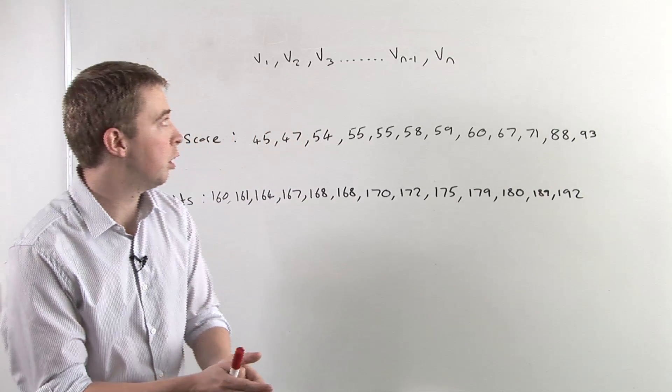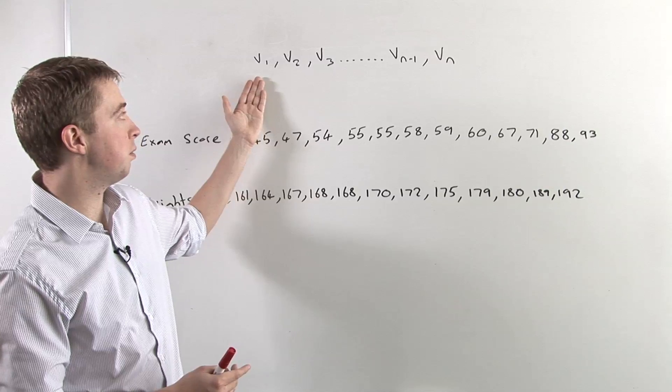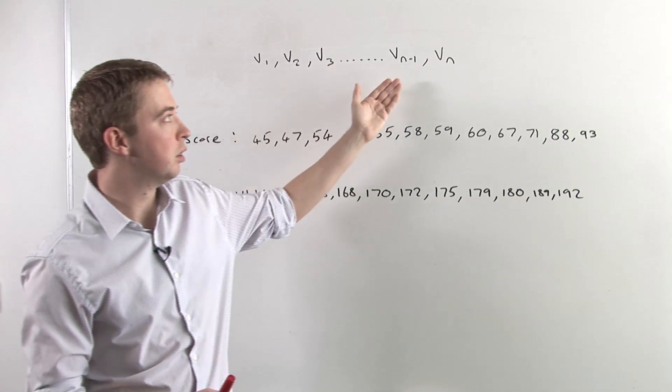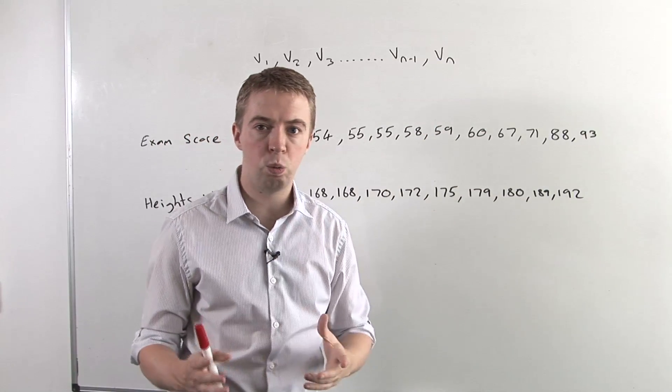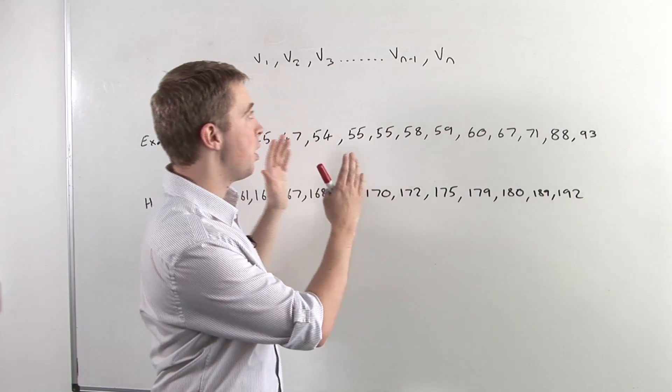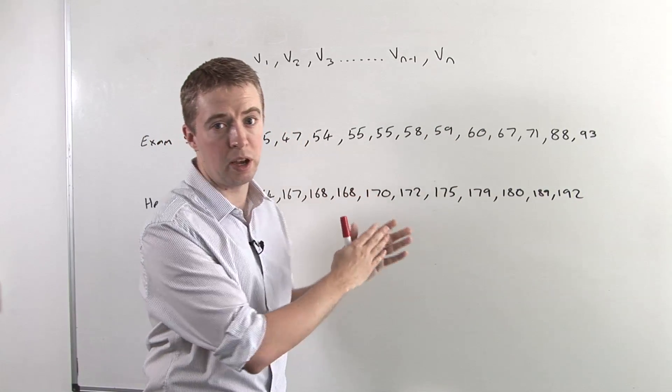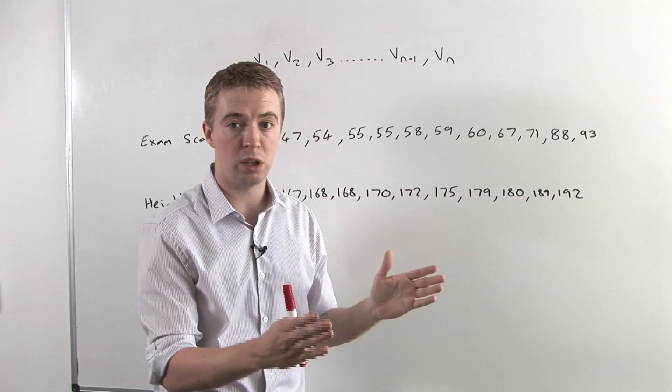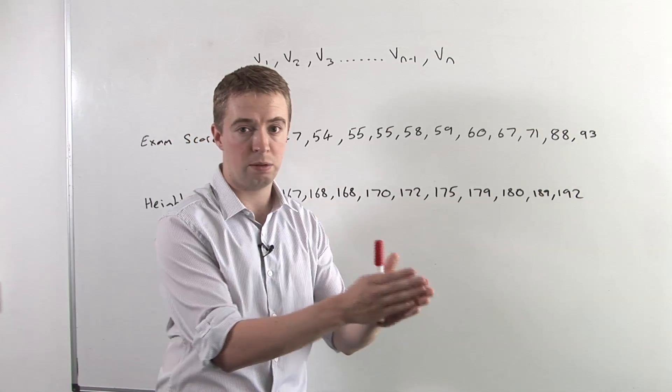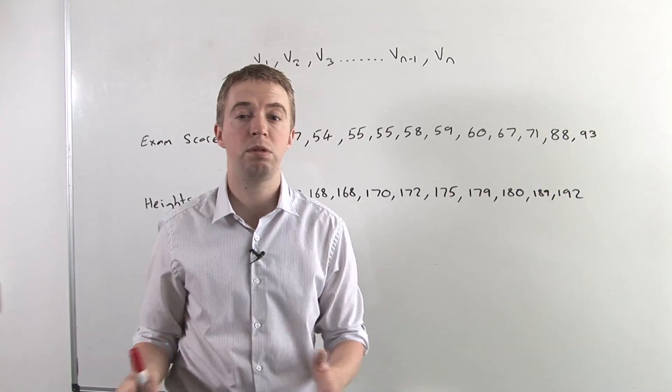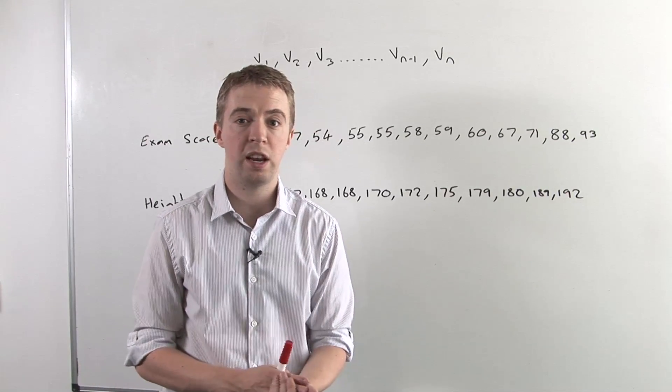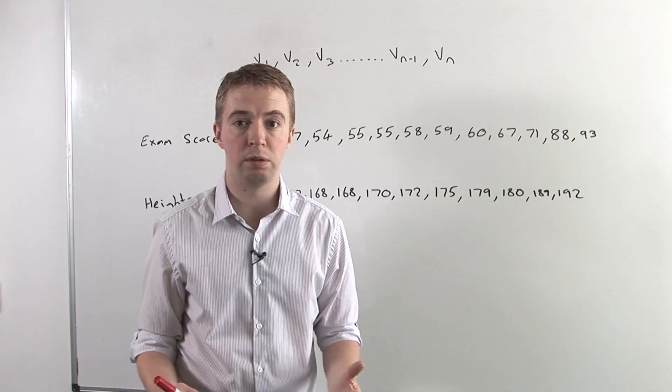If we have a series of values V1, V2, V3, all the way up to Vn minus 1, Vn, then we would look to find the middle value of that. To do that, we have to order the data from lowest first to highest last, and then we simply count the number of values and divide that number by two to find the middle value.